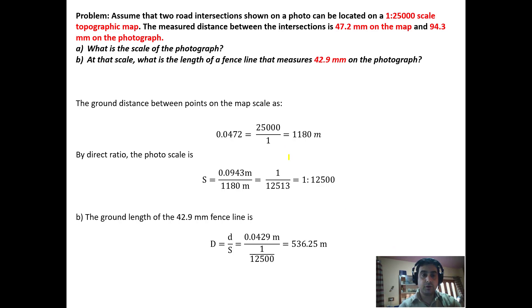Next we move to a numerical problem. Assume that two road intersections shown on a photo can be located on a topographic map which has a scale of 1 is to 25,000.